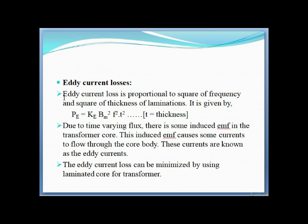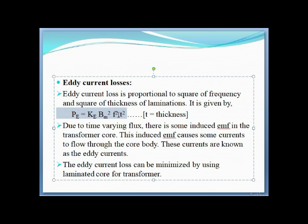Eddy current loss is proportional to the square of frequency and square of thickness of lamination. It is given by PE = KE × BM² × F² × T², where T is the thickness of the lamination — meaning the core plate size and number of plates.